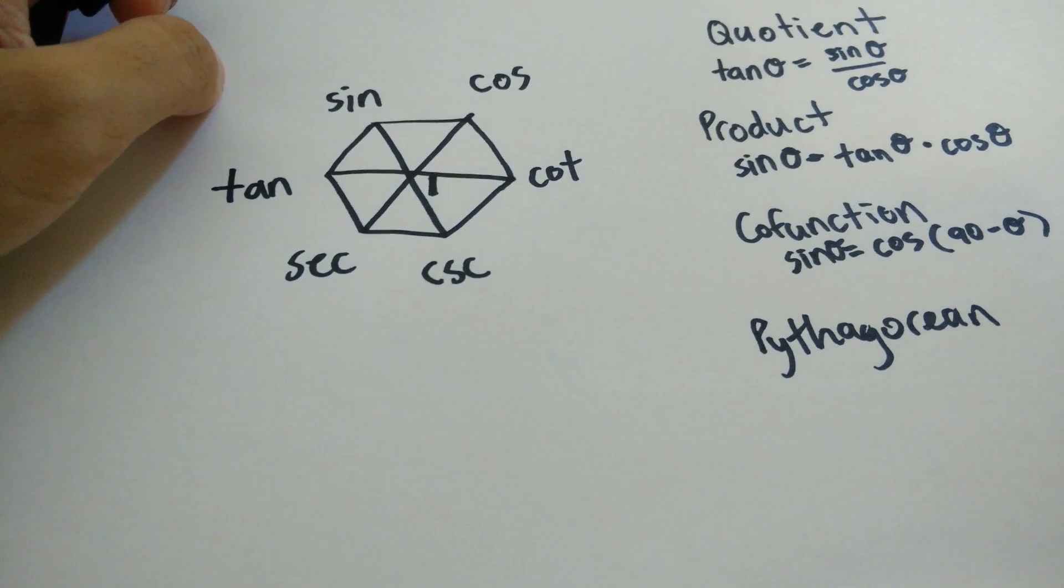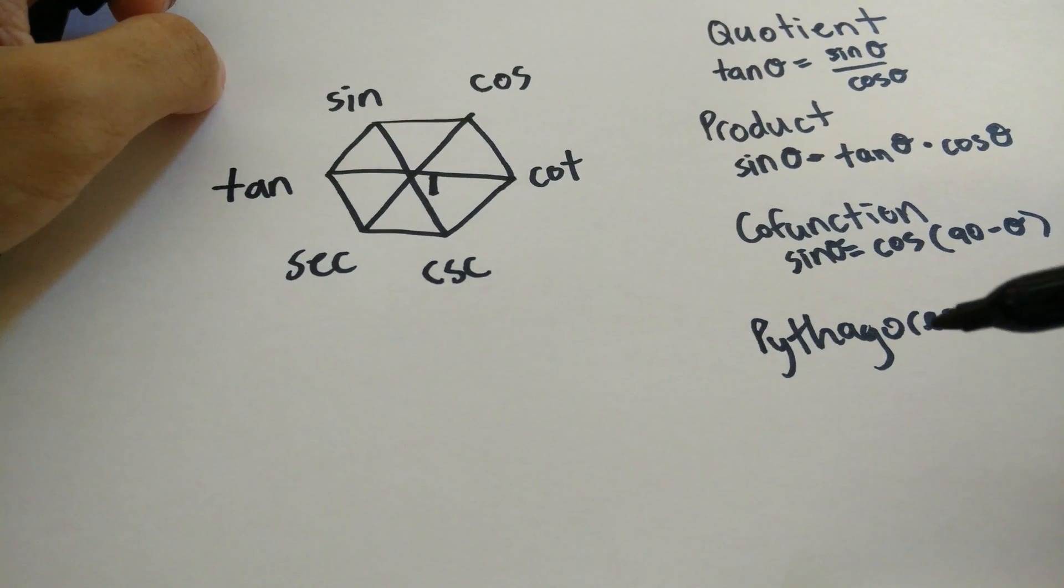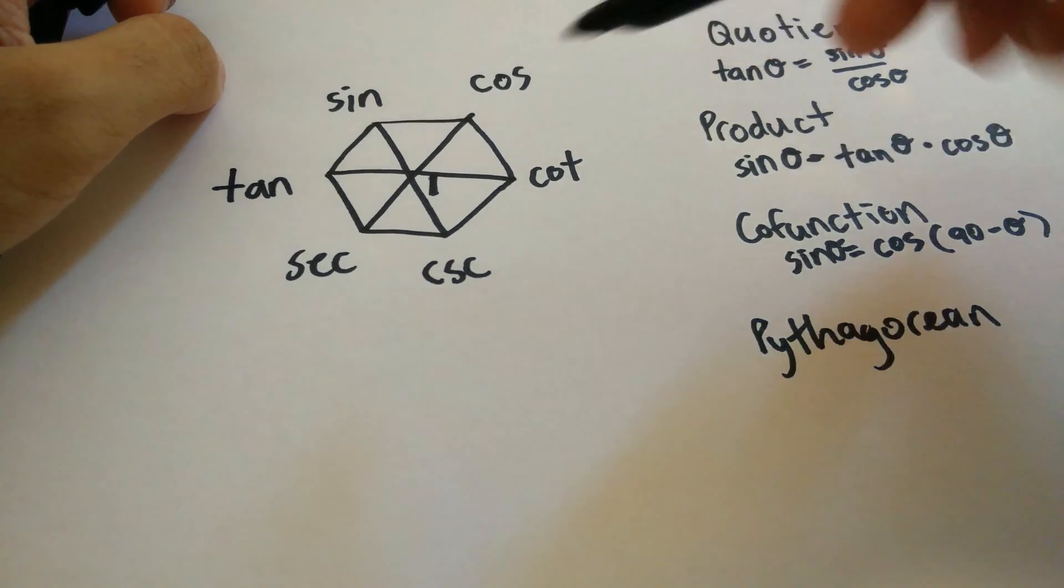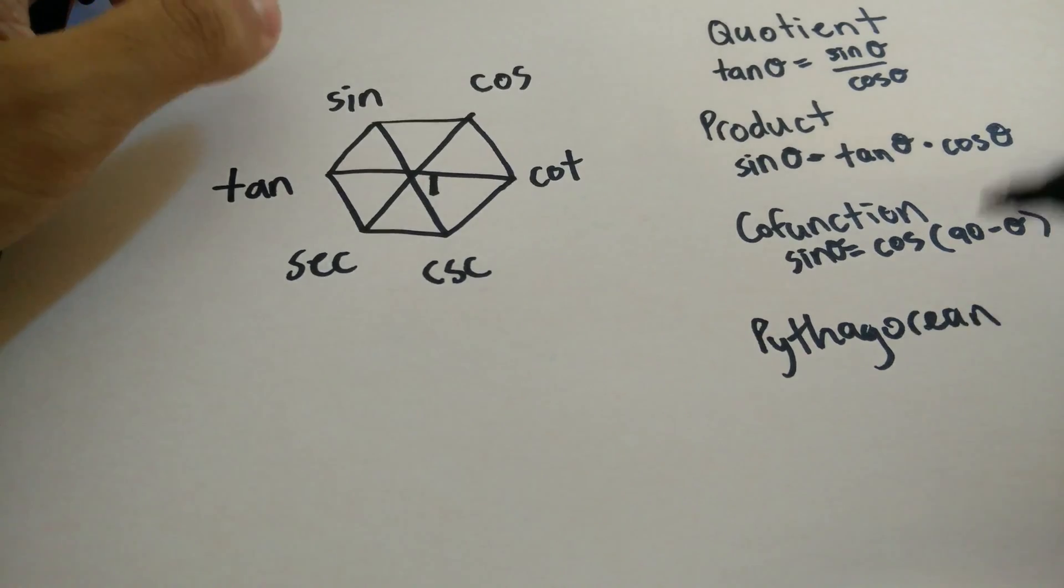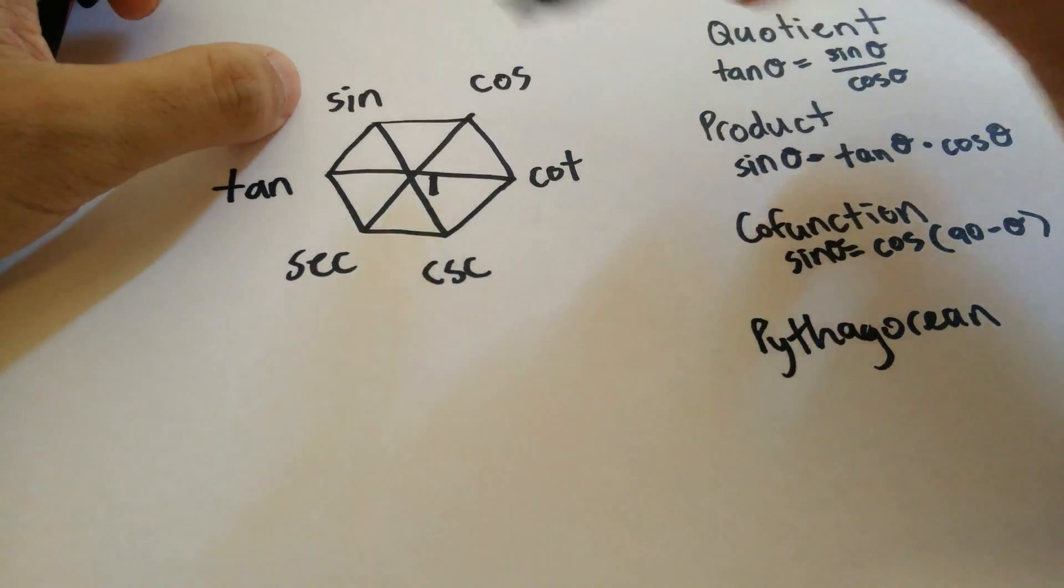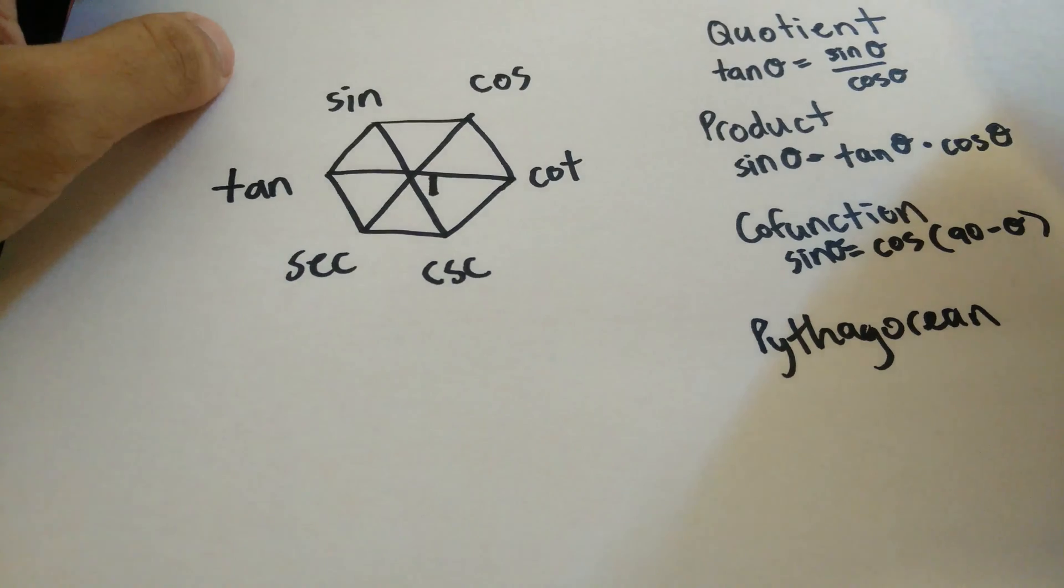The most important of the identities, in my opinion, that you can get from this are the Pythagorean identities. These are my hardest ones to remember. But in using this hexagon, it is pretty easy to remember.